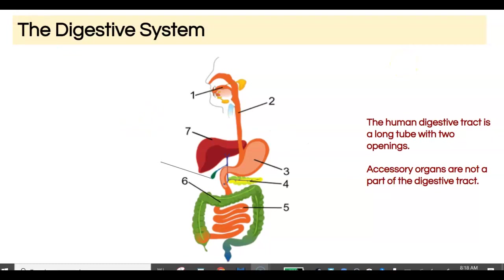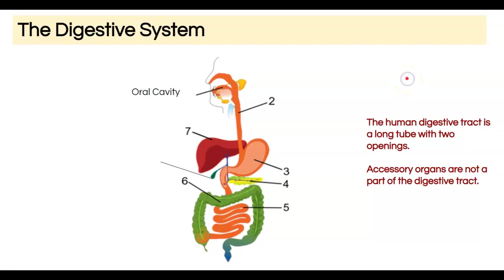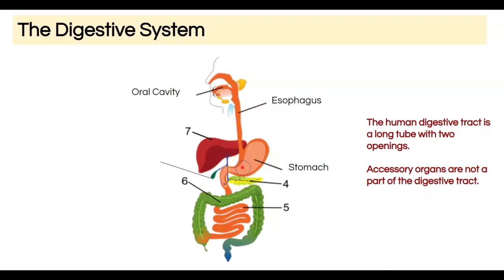I'm going to start where food enters your body — the mouth, or in science, the oral cavity. From the oral cavity, food moves down to the esophagus, and from there into this J-shaped structure called the stomach, where food is going to get churned and broken down.